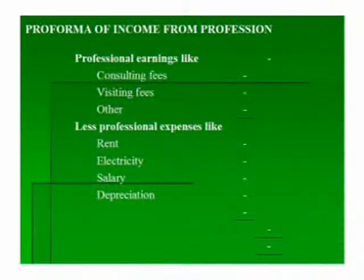Similarly, we can compute income from profession. For income from profession, a receipts and payments account or income and expenditure account will be given. We have to include all receipts relating to the profession — in the case of a doctor, consulting fee, visiting fee, and all other receipts relating to medical practice. From this sum, we can claim certain professional expenses such as salary paid to staff or other related expenses. The remaining amount is called income from profession.